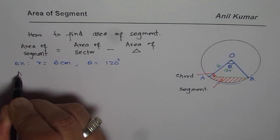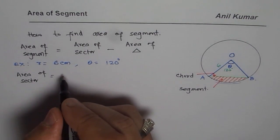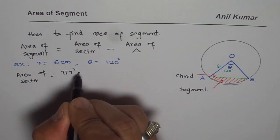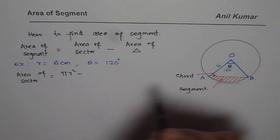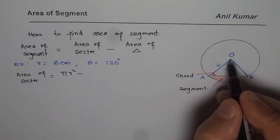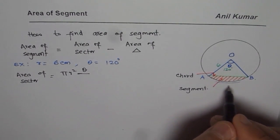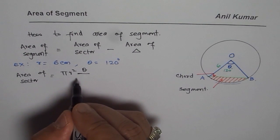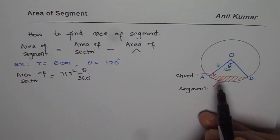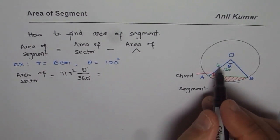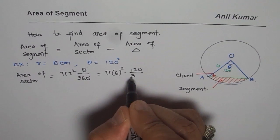Now, area of the sector is ratio of total area to the one which is enclosed by the given angle. So we can say area of sector is pi r squared times theta divided by total angle. And since we are given angle in degrees, 360 degrees. So it is a ratio of the angle enclosed. So in our case, we are given radius of 6. So we can write this as pi times 6 squared, angle is 120 degrees divided by 360 degrees.